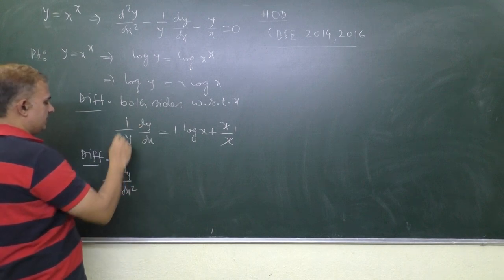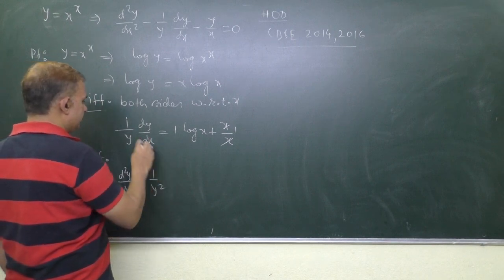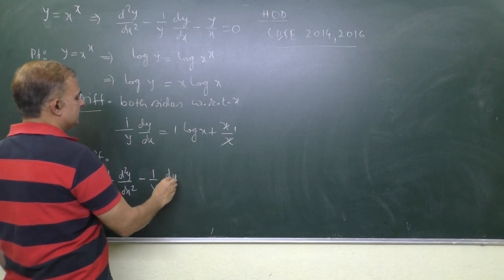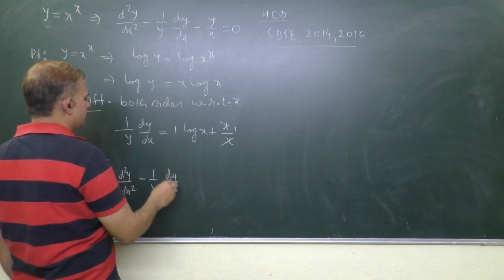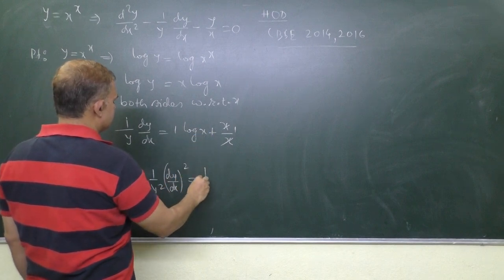Differentiation of 1 by y is minus 1 by y square and differentiation of this y is dy by dx. We already have 1 dy by dx, so it becomes dy by dx whole square. And differentiation of right side is 1 by x.